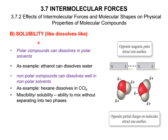As for solubility, polar compounds can dissolve in polar solvents — the concept is 'like dissolves like.' For example, ethanol is a polar molecule and dissolves in water, which is also polar. Non-polar compounds dissolve in non-polar solvents — for example, hexane in tetrachloromethane. Both are non-polar, so they mix well, which we call miscible. Miscibility is the ability to mix without separating into two phases.